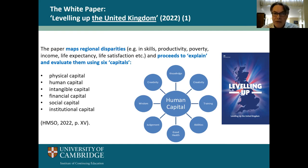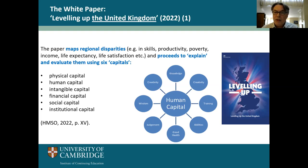We don't have time to define every one of them, but the six types of capital mentioned are physical capital, human capital, intangible capital, financial capital, social capital, and institutional capital. To give you some idea of what they mean, human capital is talking about training, skills, education, knowledge, and creativity. It's worth having a look at the document, which you can get online.